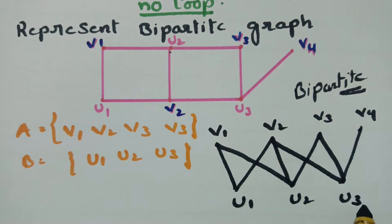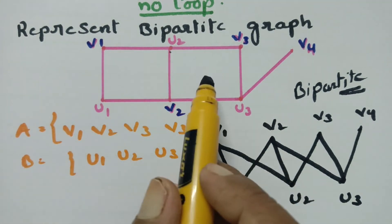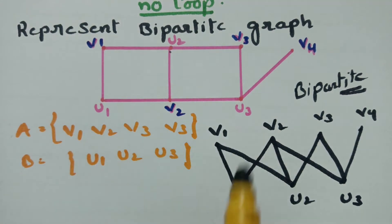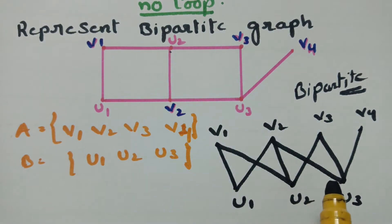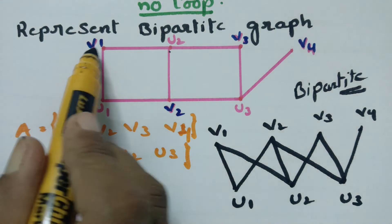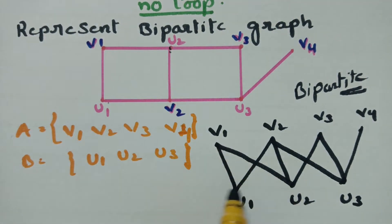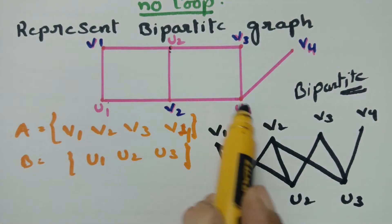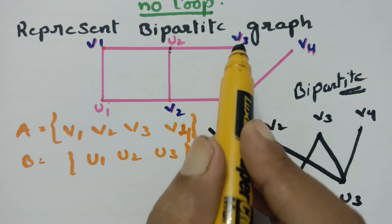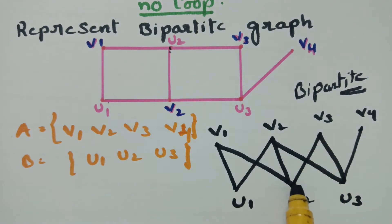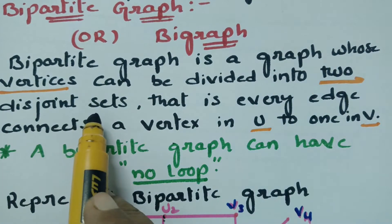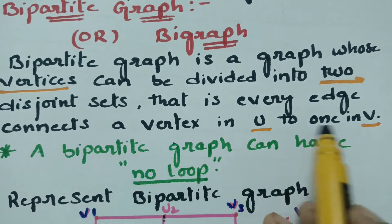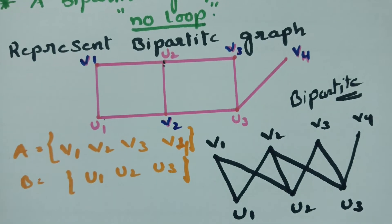To summarize: we take all the vertices and split them into two disjoint sets — v1, v2, v3, v4 in one set and u1, u2, u3 in the other. Then we frame the connections: v1 connects to u1 and u2; v2 connects to u1, u2, and u3; v3 connects to u2 and u3; and v4 connects to u3. A bigraph is a graph whose vertices can be divided into two disjoint sets where every edge connects a vertex in U to one in V.